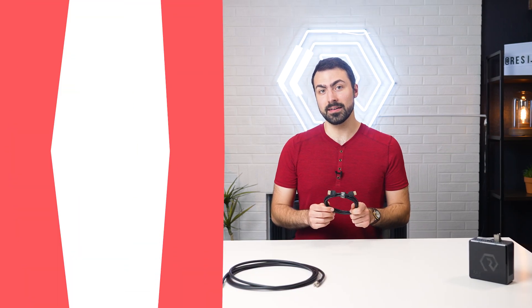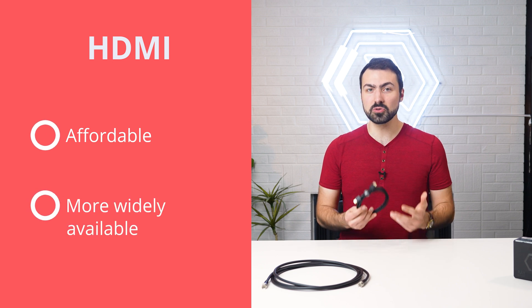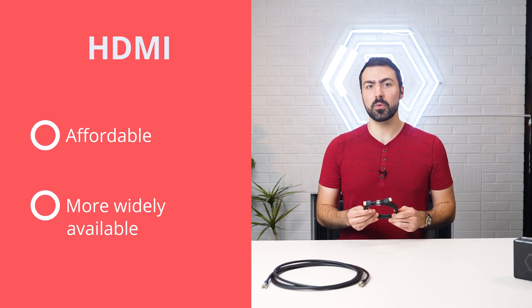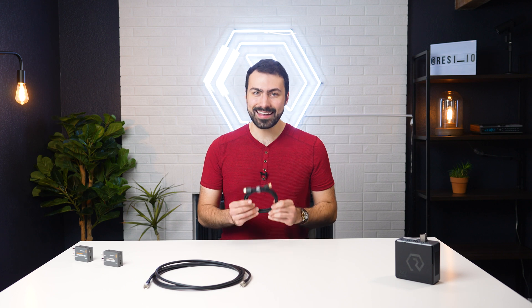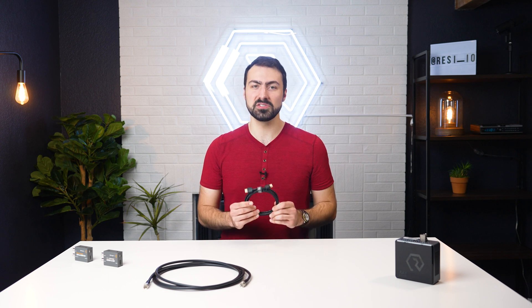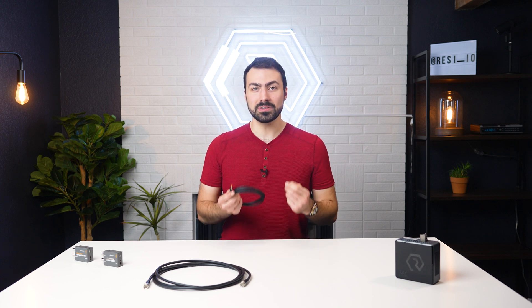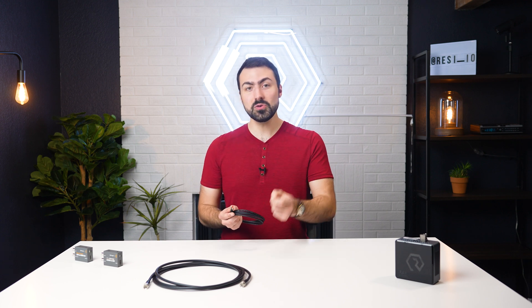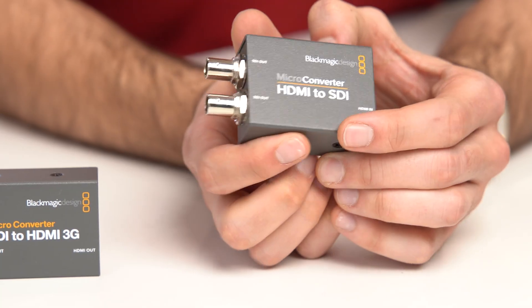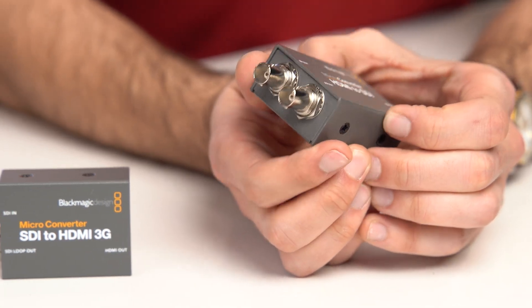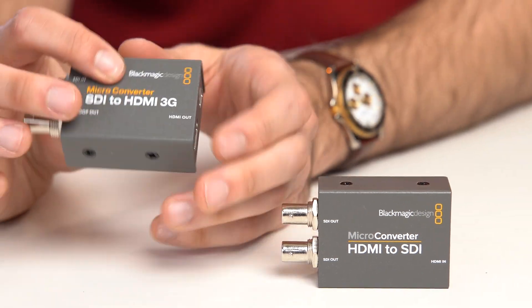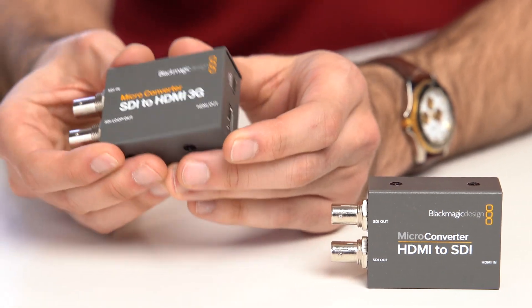HDMI, on the other hand, is more affordable and widely available in consumer electronics, but its video quality and transmission distance cannot compete with SDI in most scenarios. If you need to run HDMI longer than 25 feet, you'll need to convert your signal to SDI. We recommend getting HDMI to SDI adapters, and then SDI to HDMI adapters if your device input is HDMI. Most SDI cables won't have signal loss issues until they reach 100 meters, or a little over 300 feet.